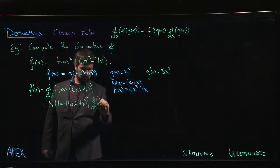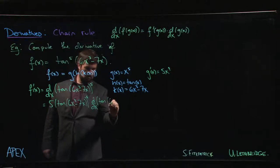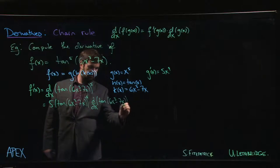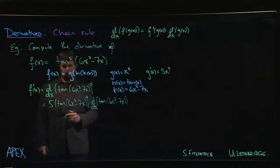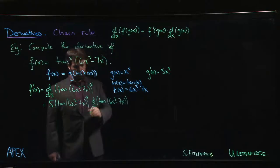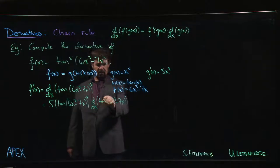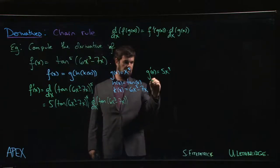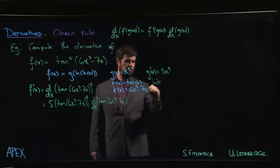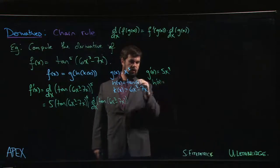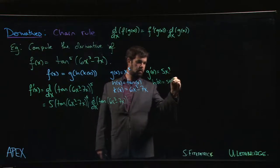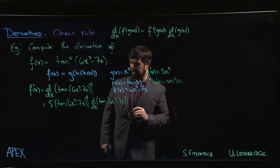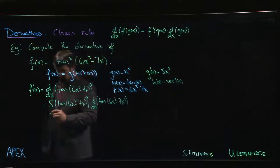So we need to multiply by the derivative of tan of 6x cubed minus 7x. The next function the derivative sees is the tangent function, and you'll recall that we showed using the quotient rule that the derivative of tan is secant squared.